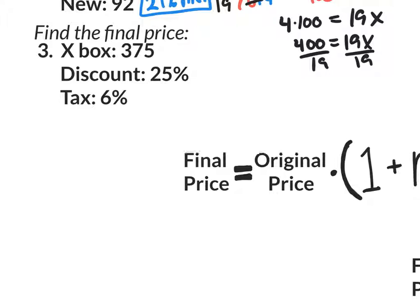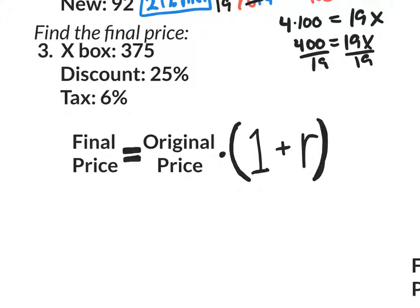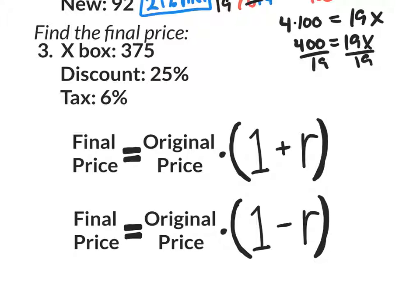Now, we need to have this memorized. This one or this one, depending on whether you're going up in price or you're decreasing the price. But it's always the same situation. Take your original price, multiply it by parentheses, 1 plus R, if it's an increase in price like taxes, or 1 minus R, if it's a decrease in price when we're talking about like a discount. So we're going to use both of these, 1 with a plus, 1 with a minus.